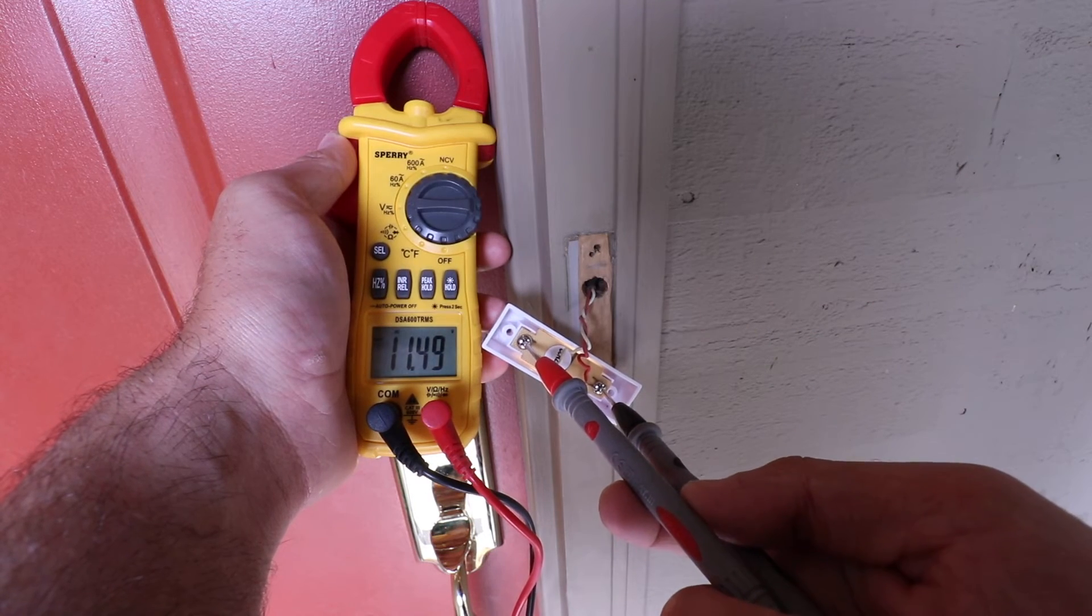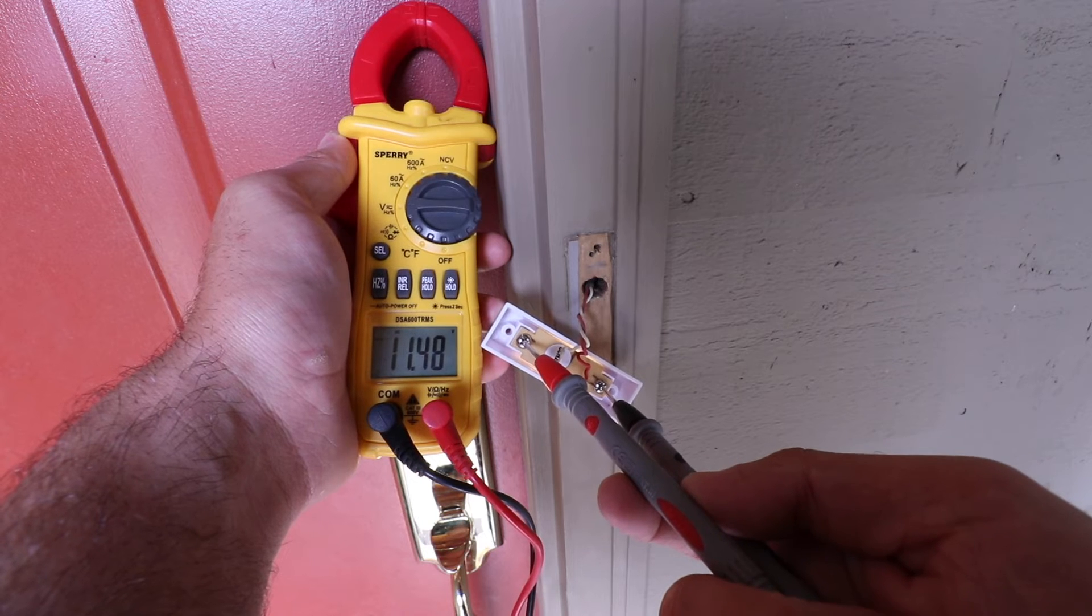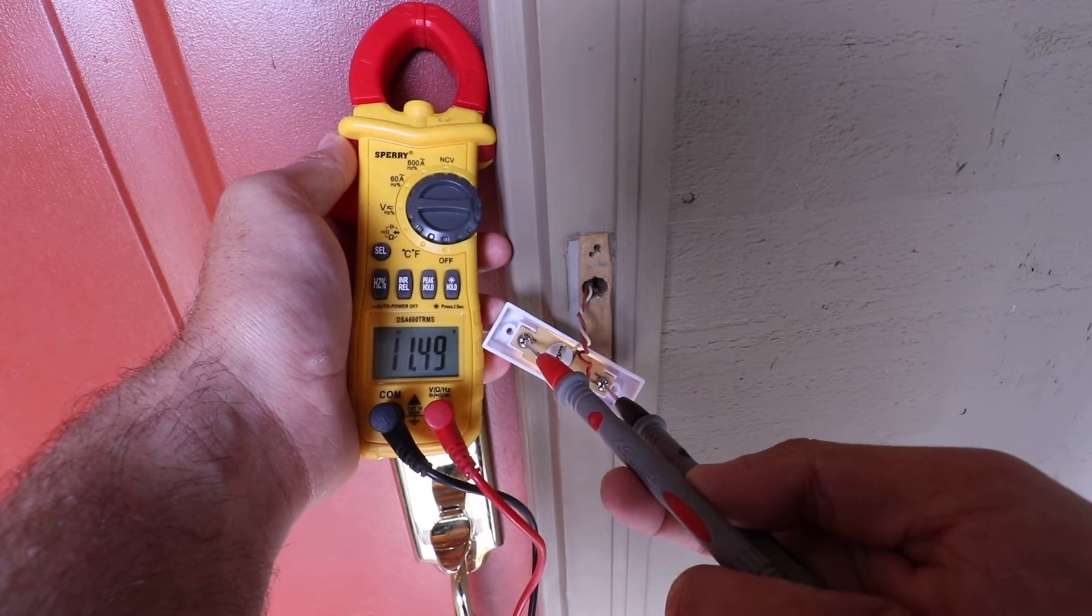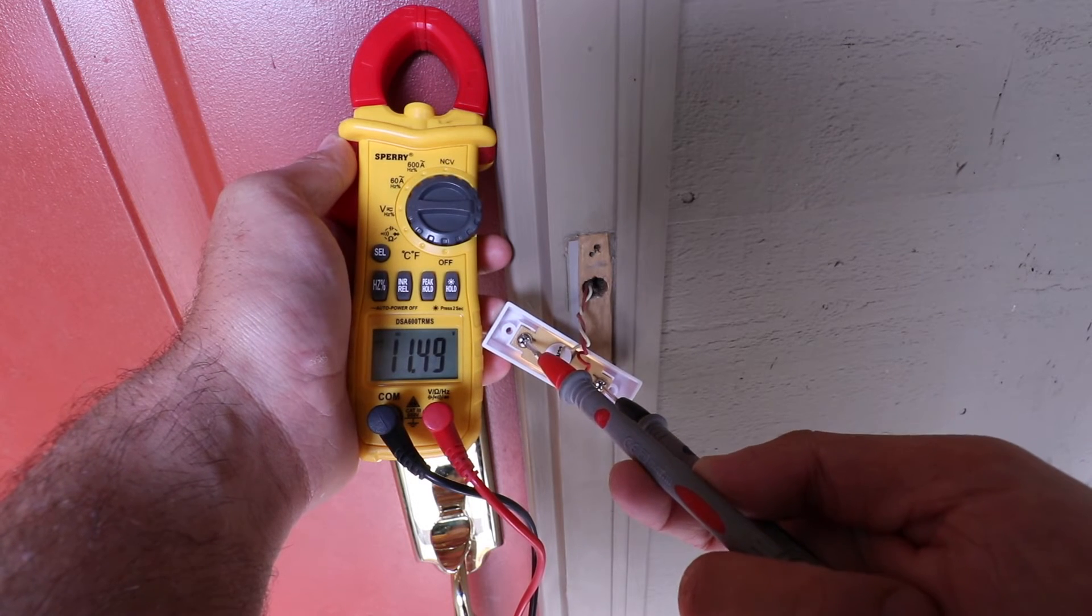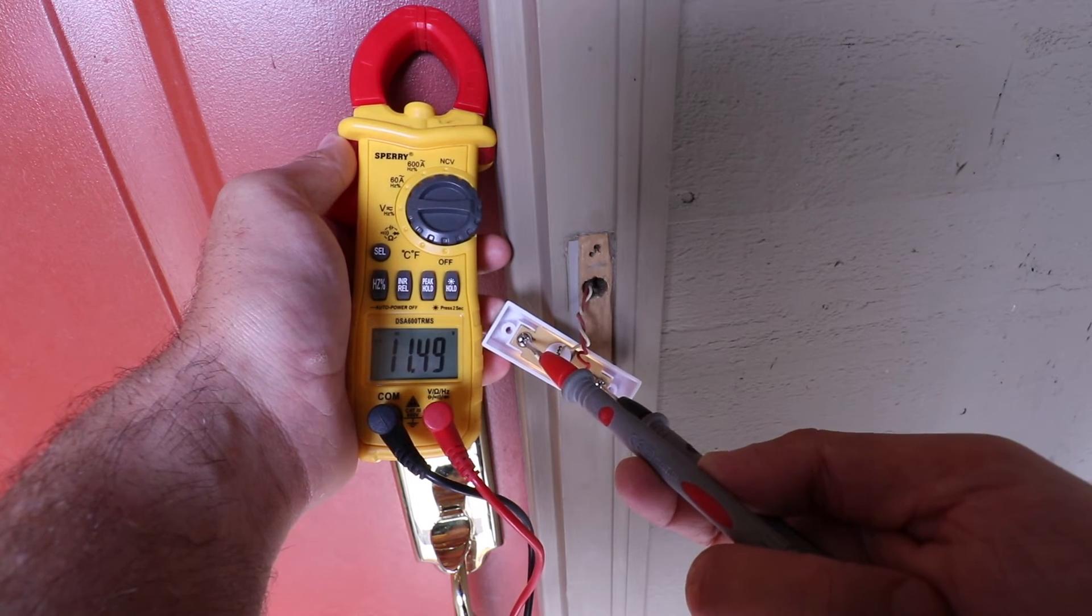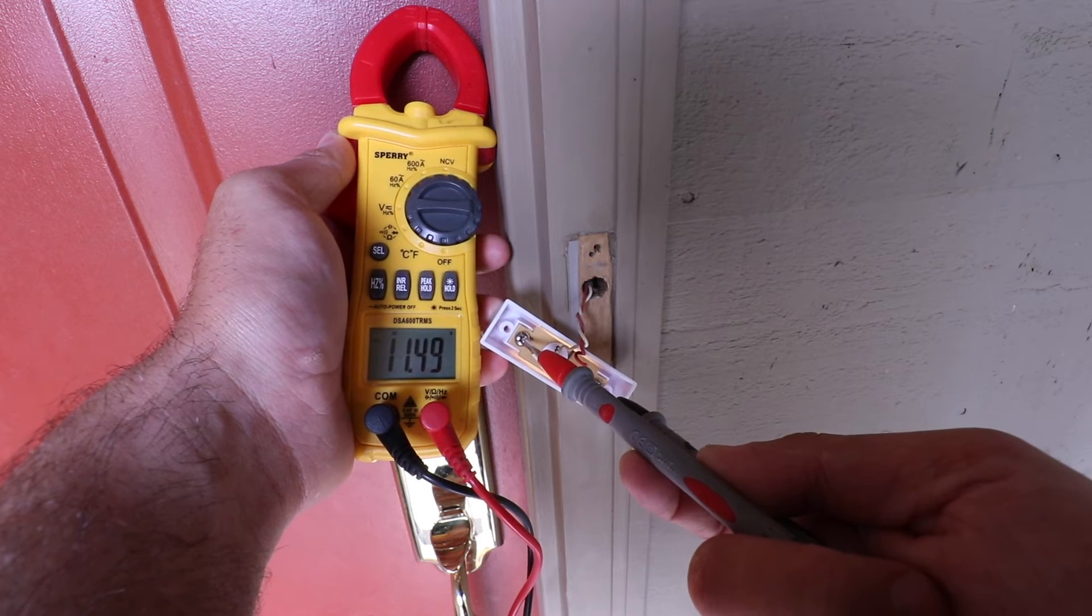Now if you have low transformer voltage and you want a higher voltage at your doorbell what you can do is go ahead and upgrade that doorbell transformer to 16 volts or 24 volts if you're putting something else on there that requires more voltage.